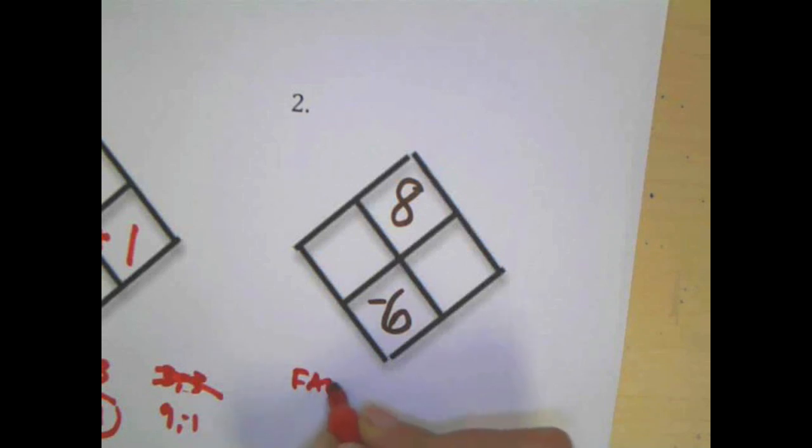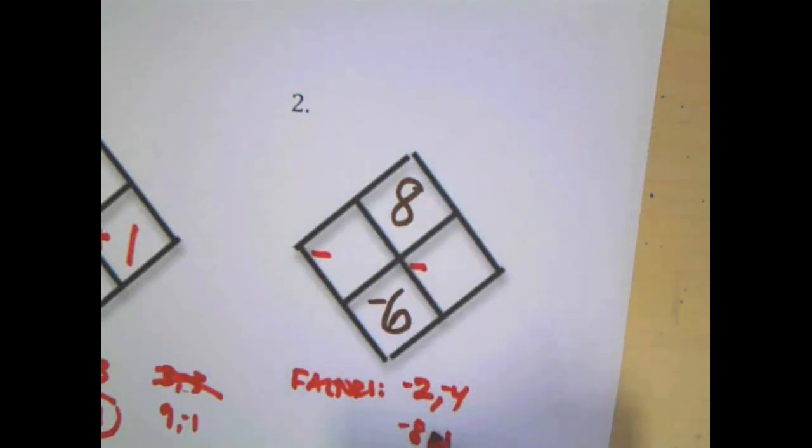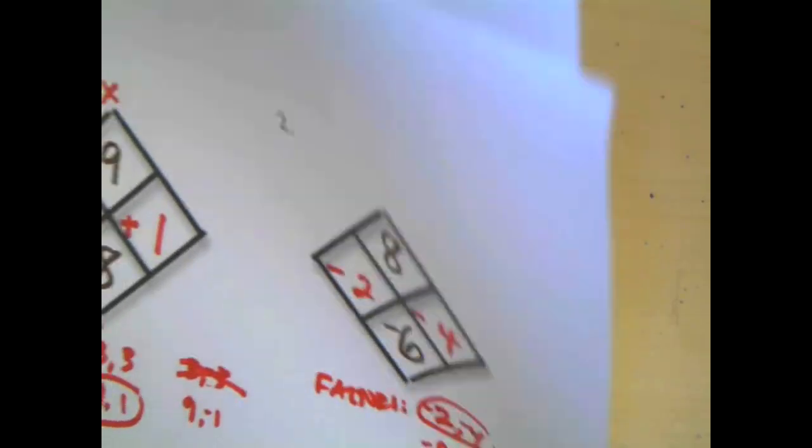Same thing. Factors: 2 and 4, 8 and 1. Because the sum is negative but they multiply to a positive, that had to be 2 negatives. I can see that's the combination that adds to negative 6 but multiplies to positive 8.